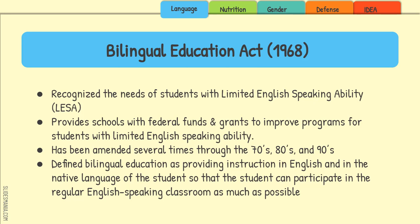Next is the Bilingual Education Act, which recognized a population in America of students with limited English speaking ability — also called ESOL, ESL, or ELL students. These are students learning English while attending school in America, where instruction is in English. This act provides federal funding and grants to improve programs for those with limited English speaking ability so they can continue in the regular classroom and learn subjects like science, math, and social studies while also learning English.